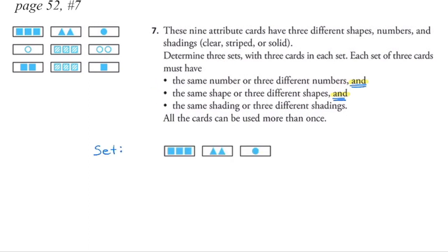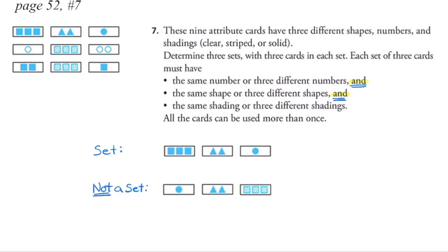For example, this is a set that fits all of the attributes. We have three different numbers of objects — one, two, three — three different shapes — circle, triangles, squares — and all the same shading; all three cards have a solid shading. This is an example of three cards that would not be a valid set, because with shading we need either all the same or three different shadings, and this example has neither.